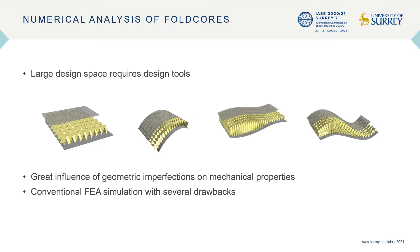Geometric imperfections need to be addressed as they have great influence on the mechanical properties of the whole structure. This leads to a challenge for the simulation because on one hand we have many necessary simulations that ask for automated model setups, but on the other hand these imperfections need to be considered and mapped onto the numerical model. This usually leads to the need of remeshing to accurately represent the deformations, but that's impractical in an automated process.